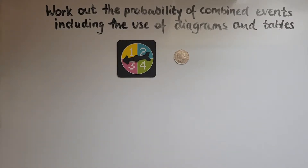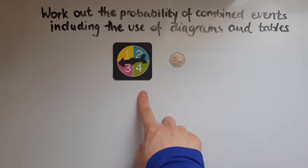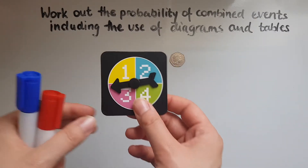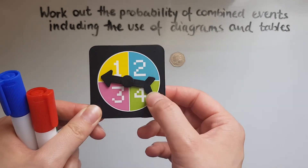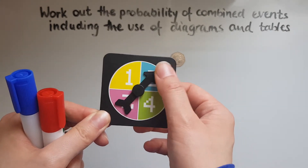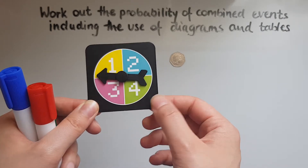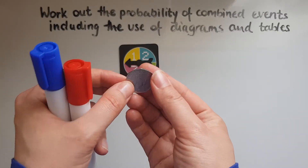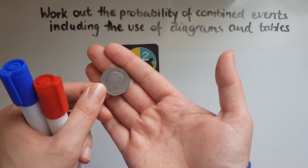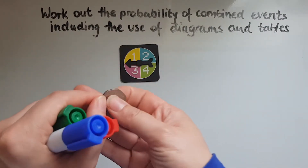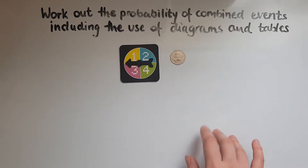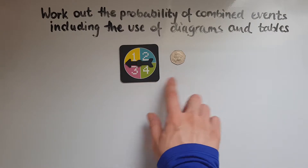In this video we'll learn to work out the probability of combined events, including the use of diagrams and tables. I've got two objects: a spinner and a coin. The spinner can land on one, two, three, or four, and the probability of each is a quarter. With a coin we can get heads or tails, each with probability of a half. We'll look at the probability of combined events from both of these.